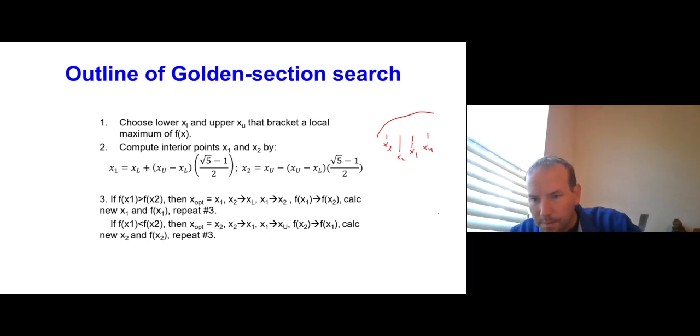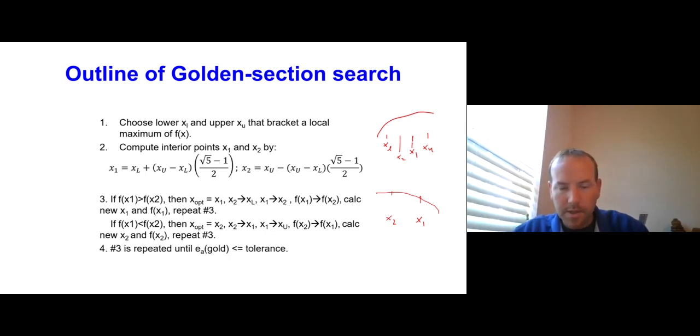If, on the other hand, it went more like this and we had f of x1 is less than f of x2, then you do a different assignment. You say that the optimum value becomes x2, which is a good choice because it happens to be quite high on the function. Then x2 becomes the new x1, x1 becomes the new XU. Then you calculate the new x2 and repeat the process. You repeat this process, not infinitely, but until you're meeting the golden section search stopping criteria.